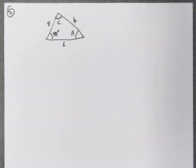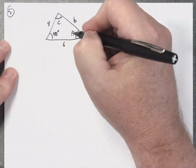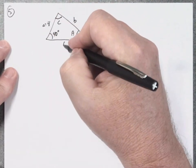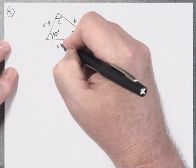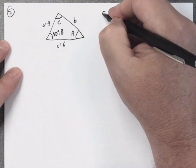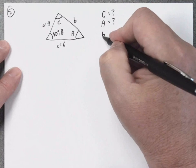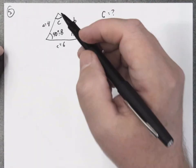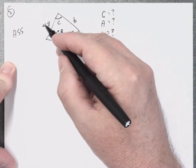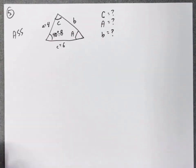We have two more triangle problems using either law of sines or cosines. For problem five, the given information labels side a, side c as six, and angle B as 40 degrees. We're trying to determine angle C, angle A, and side B. We have an angle and two sides, but since side a, angle B, and side c are non-matching letters, the only thing that will work is the law of cosines.